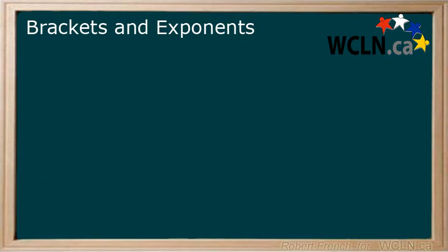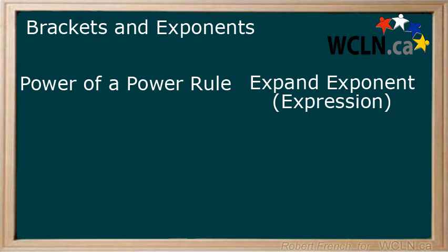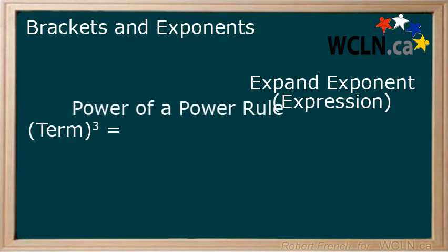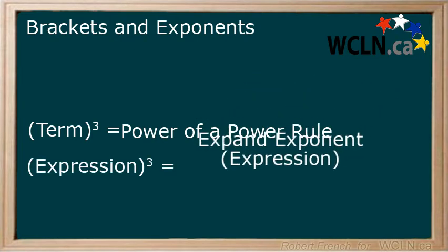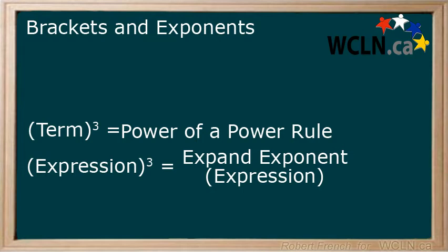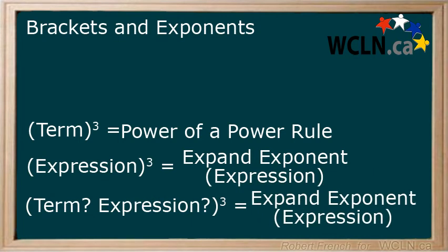So, how do we know to use the power of a power rule and when to multiply an expression to itself? If you have a single term in the brackets, you will use the power of a power rule. If you have an expression, you will need to multiply the expression to itself the same number of times as your exponent. If you ever come across a problem and you aren't sure what to do, multiply the expression to itself. You will always get the correct answer this way. It is just not as efficient as the power of a power rule.